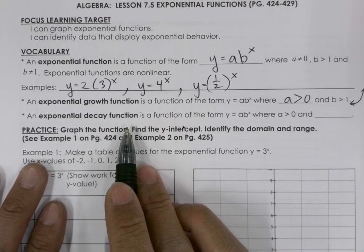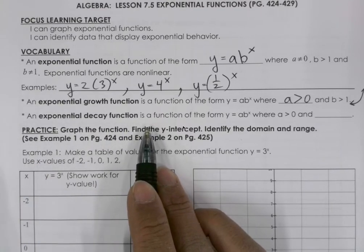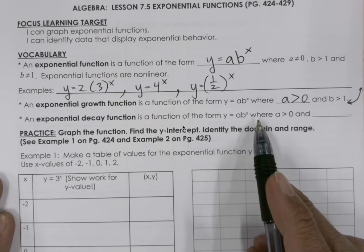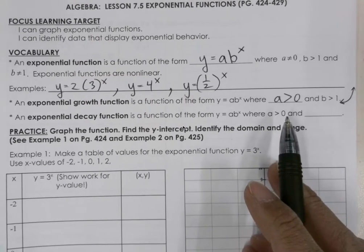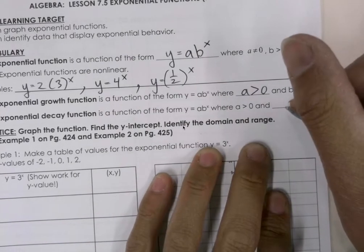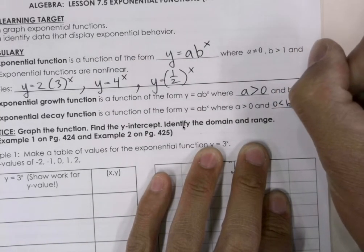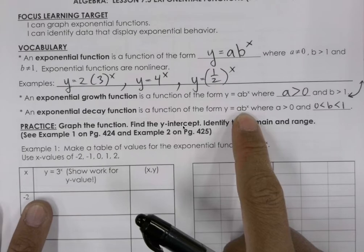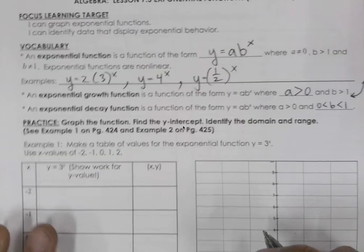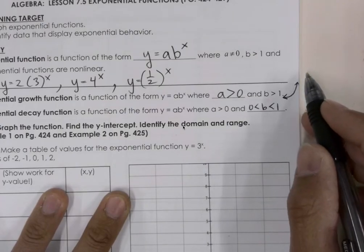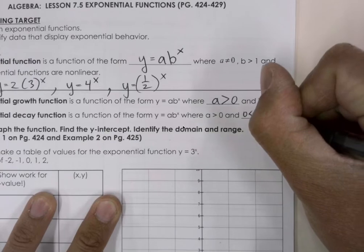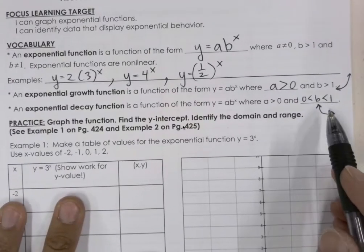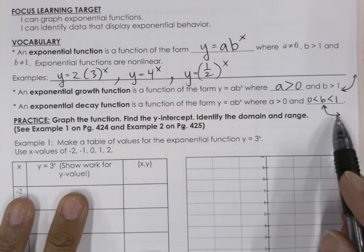Exponential decay function is a function of the form y equals a times b to the power of x, where 0 is less than b is less than 1. If b is a fraction, then we have an exponential decay function. The decay function is not moving upward — our function will be going downward. A decay function starts high and it eventually bottoms out.